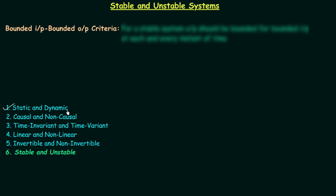Till now we have seen what are static and dynamic systems, what are causal and non-causal systems, what are time-invariant and time-variant systems, what are linear and non-linear systems, and the fifth one: invertible and non-invertible systems. Now we will discuss the next classification, which is also the last classification of this chapter: stable and unstable systems. Once we are done with stable and unstable systems, we will start our next chapter, which is LTI systems.